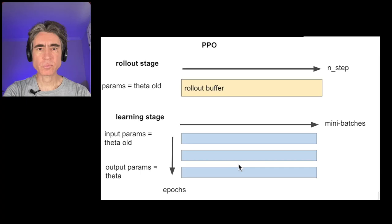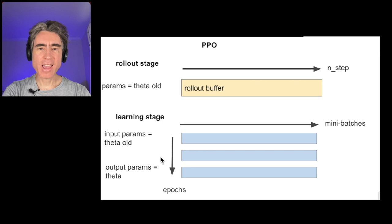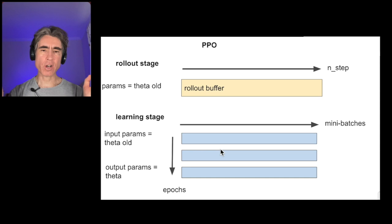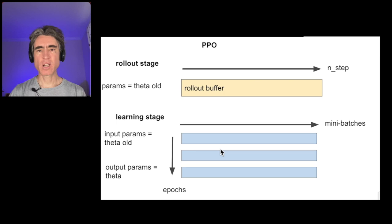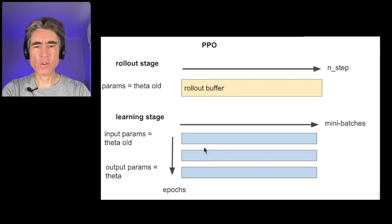I've made a slide for PPO. There are two parts to PPO: there's the rollout stage, where the agent is playing in the environment, and then there's the learning stage where the agent is not playing but is learning. The agent comprises two neural networks: the value neural network to predict the value of a state, and the policy neural network, which decides what actions to take. Both of those are going to learn during the learning stage.